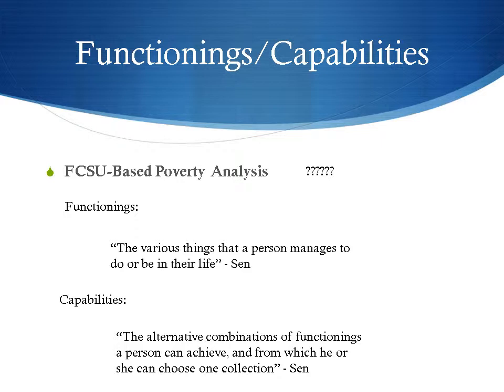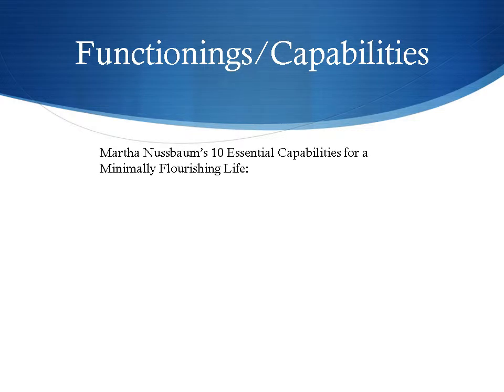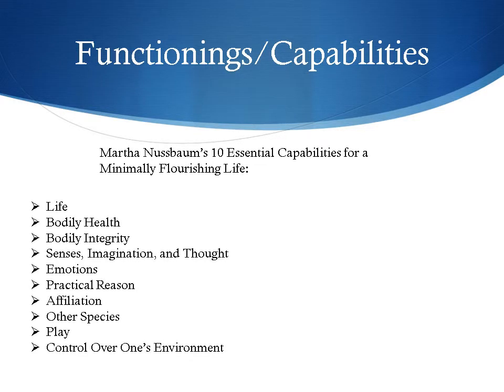Martha Nussbaum goes so far as to list 10 capabilities she believes are necessary for a person to pursue a dignified and minimally flourishing life. These are: life, bodily health, bodily integrity, senses, imagination and thought, emotions, practical reason, affiliation, other species, play, and control over one's environment.